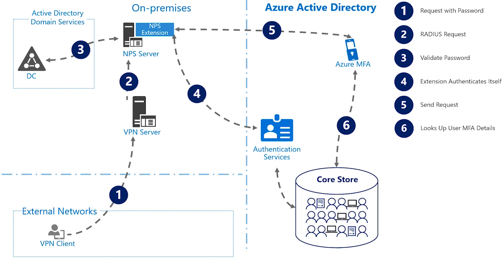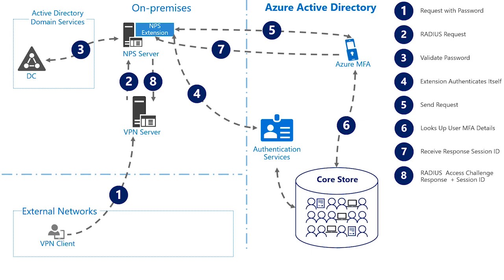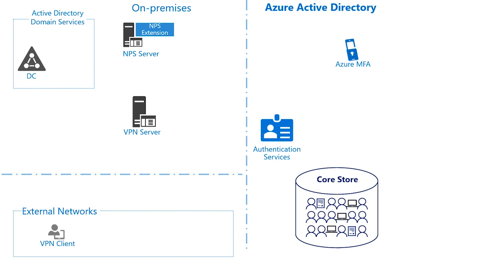When the user's default method is a TOTP verification code, we first do the primary authentication using their username and password credentials entered into the VPN client. But when we invoke the MFA service, it looks up the MFA details and responds with a session ID and challenge message, and a request for an access challenge is sent back to the NPS server extension. The NPS server responds back to the VPN server with an access challenge with that session ID and the challenge message, which passes back to the VPN client. It is important to know that not all Radius clients support asking for an access challenge, so it's important to verify that it is supported with the network service using Radius.